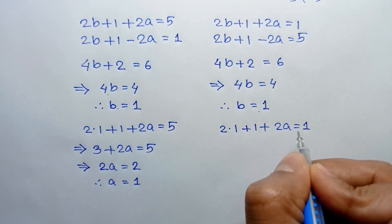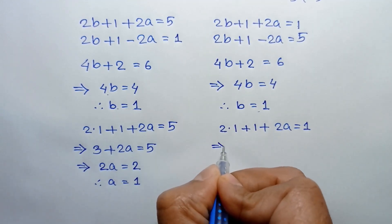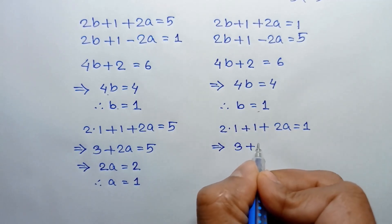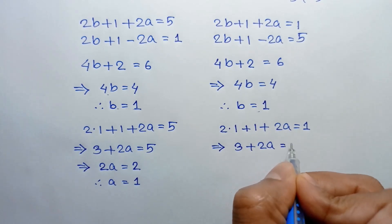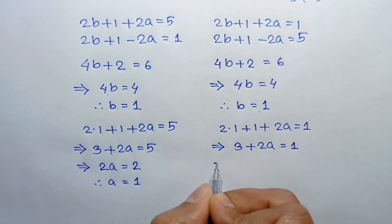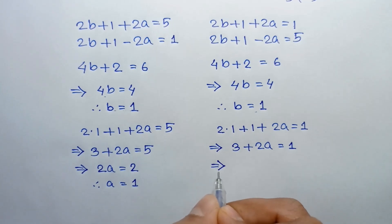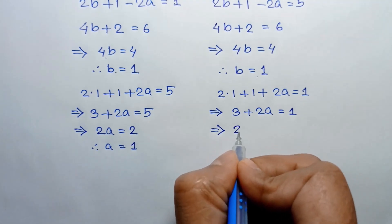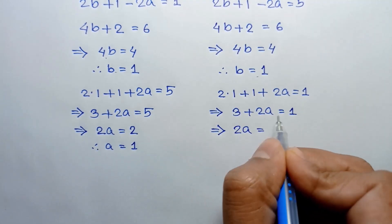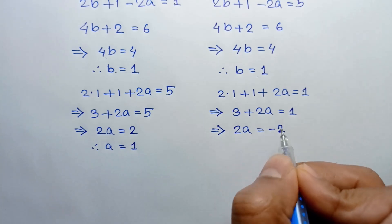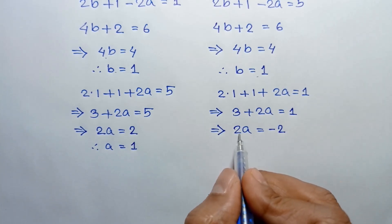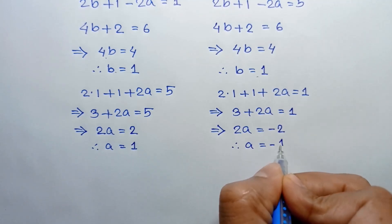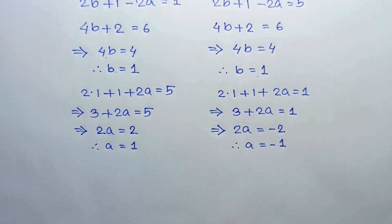Substituting b = 1 into the equation: 2(1) + 1 + 2a = 1, so 3 + 2a = 1. Taking 3 to the right side, 2a = −2. Dividing both sides by 2, a = −1.